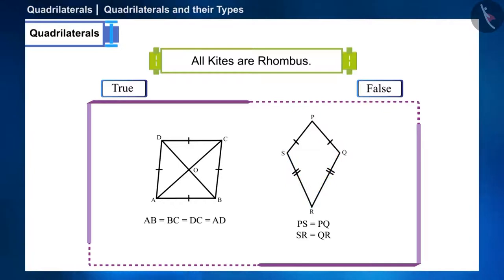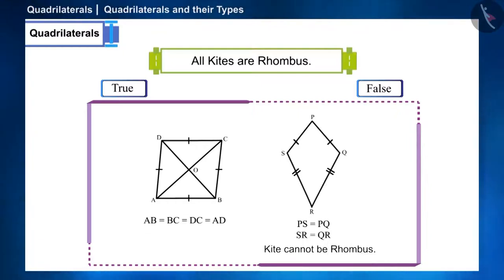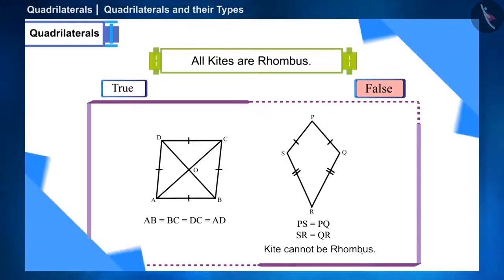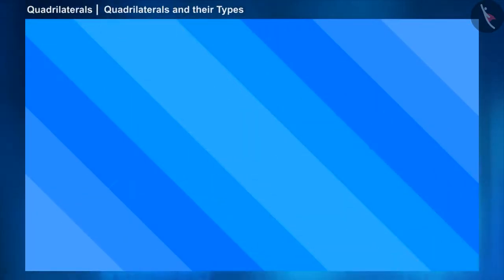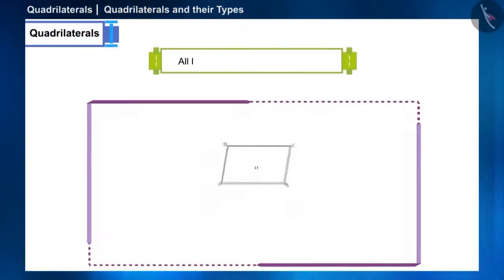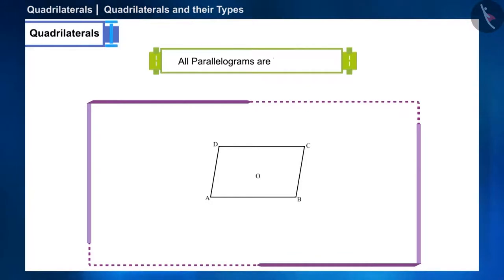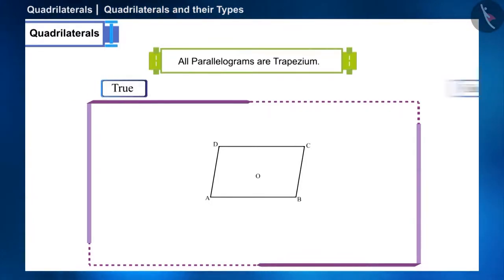The opposite sides of a kite are not equal, therefore the kite is not a rhombus — the given statement is false. Let's go ahead and see the second statement: all parallelograms are trapezium. Tell whether this statement is true or false.